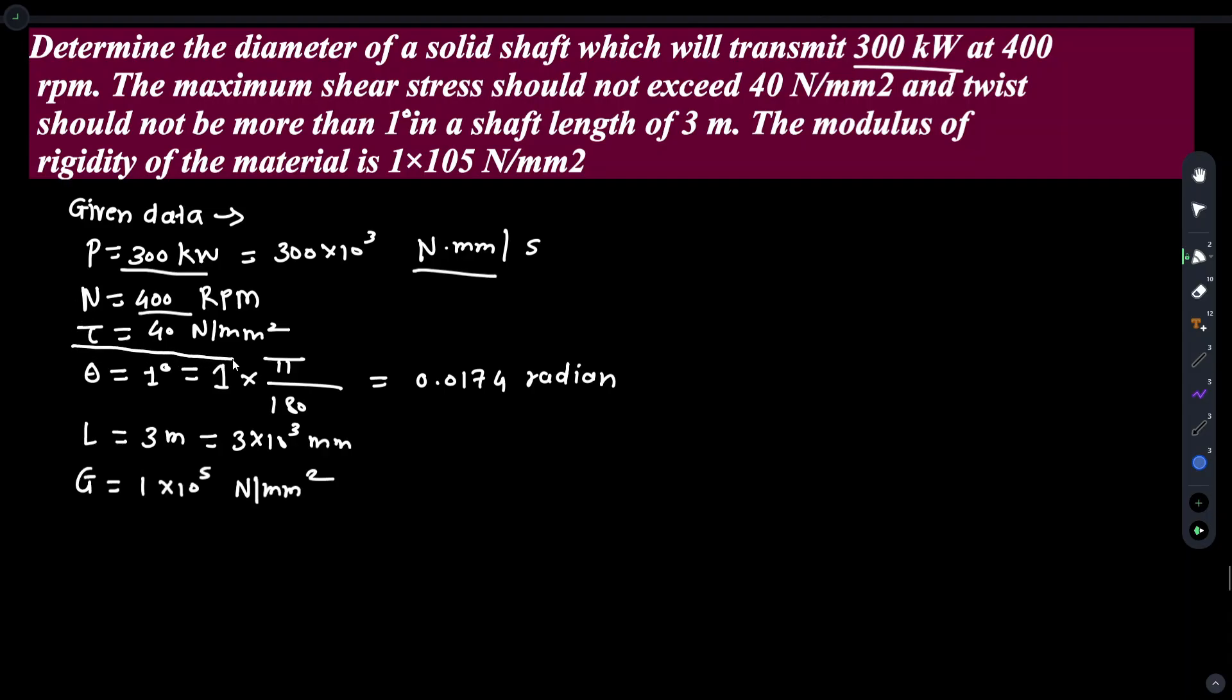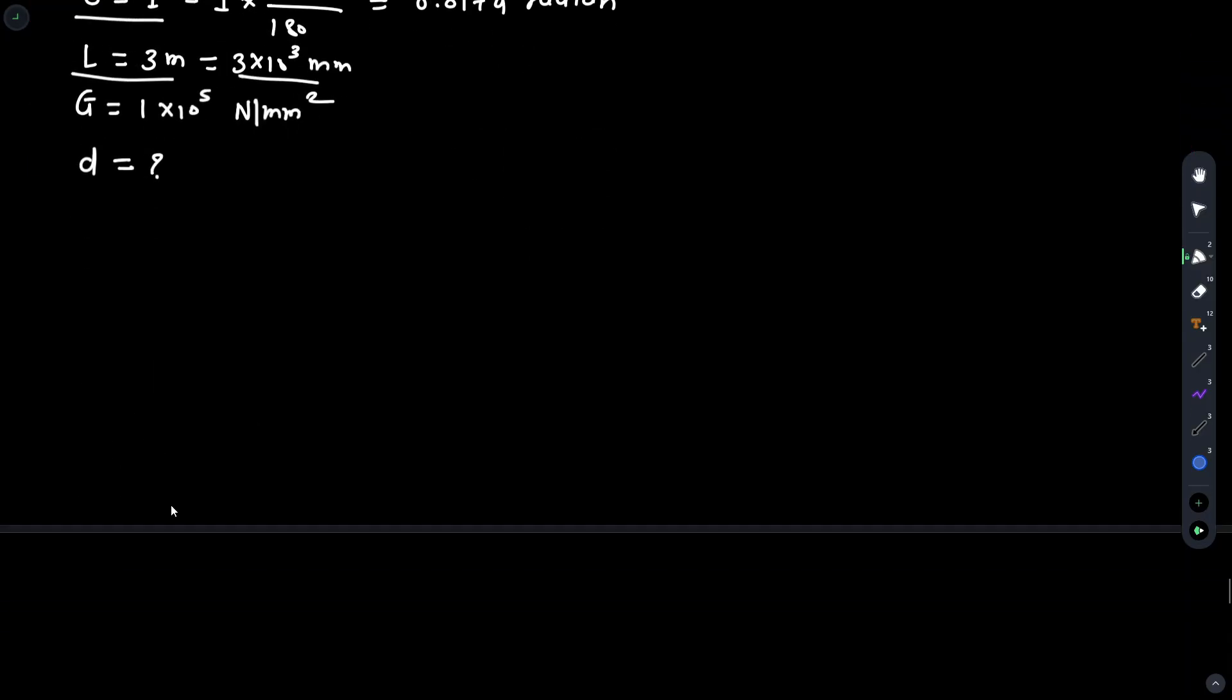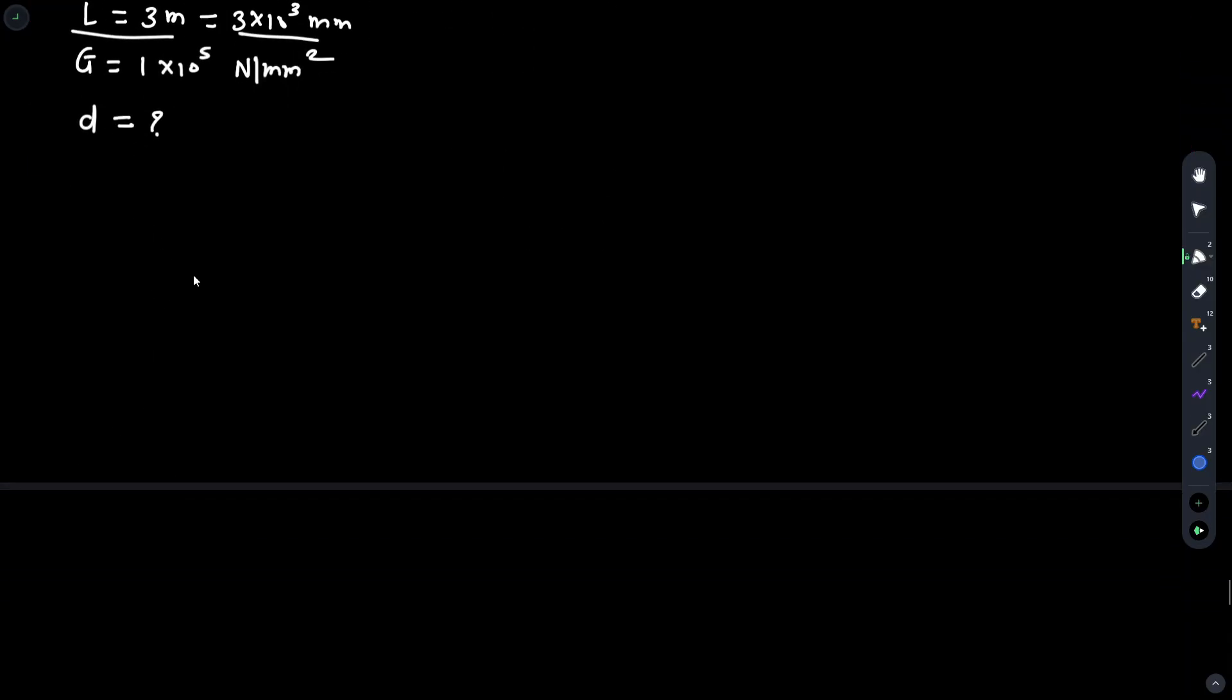tau is equal to 40 N per mm squared, and twist should not be more than 1 degree, so theta equals 1 degree, which is 1 times pi by 180 equals 0.0174 radians. Length is 3 meters, so L equals 3 meters converted into millimeters. The modulus of rigidity of the material is 1 times 10 raised to 5 N per mm squared. To find diameter, we first calculate the torque.